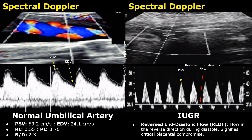Here is another case showing reversed end-diastolic flow in a case of growth restriction. The PSV is around 40 centimeters per second, but the EDV is around negative 10 centimeters per second — the negative sign indicates flow in the reverse direction. Thank you so much for watching. Stay tuned for more imaging videos.